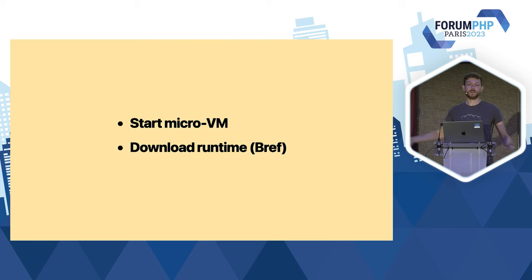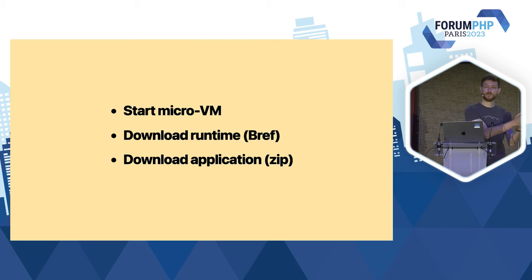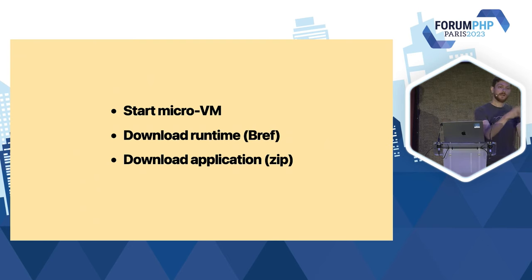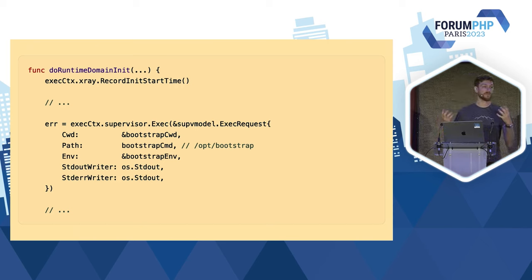L'instance fait tourner Linux, ça ressemble vraiment à un conteneur ou à une petite machine virtuelle. Notre application qu'on a déployée est téléchargée et montée. On déploie avec la commande serverless deploy, ça nous déploie avec un zip — on peut aussi déployer des images Docker sur Lambda, à savoir qu'il n'y a pas de différence pratique. Ensuite vient démarrer la runtime API, qui est un peu la tour de contrôle dans l'instance. C'est une toute petite API qui tourne dans le cold start, qui est un binaire en Go — on peut trouver d'ailleurs le code source sur GitHub.